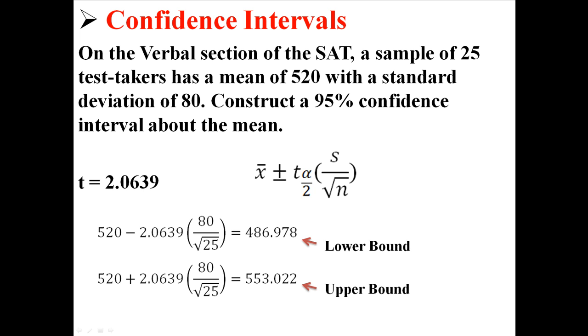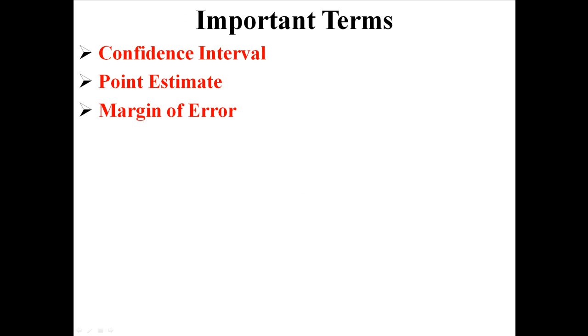So the first number is our lower bound, and the second number is our upper bound. So we can say that we're 95% confident that the mean SAT score lies between 486.978 and 553.022. That's how you construct a confidence interval about the mean when you do not know what the population standard deviation is.